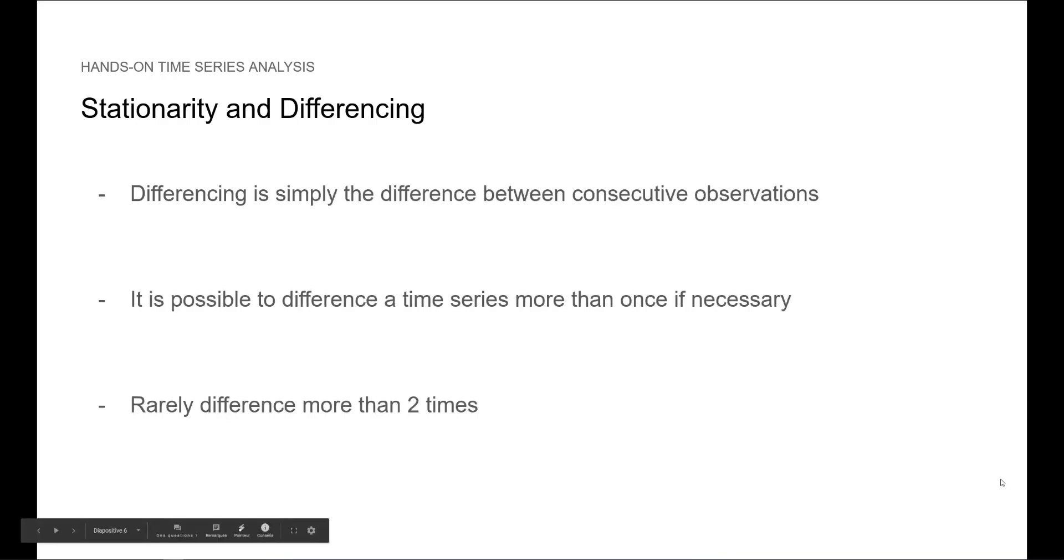Differencing is simply the difference between consecutive observations. We can difference a time series more than once if necessary, until we make it stationary. However, we never difference more than twice.